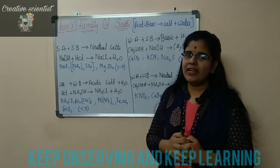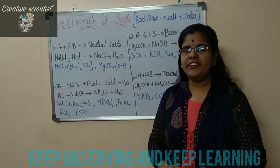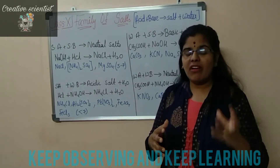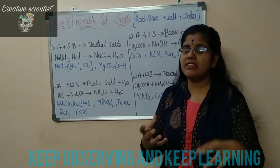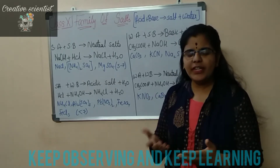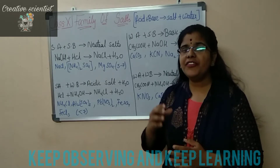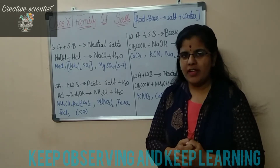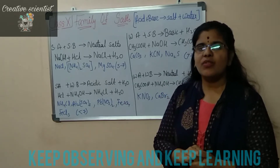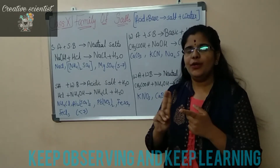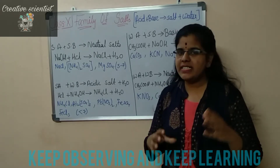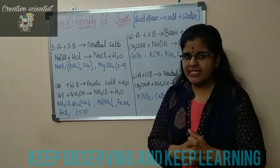Let us see them all in brief. Based on the different combinations of acids and bases — meaning a strong acid or a strong base, or a weak acid and a weak base — there are different types of salts formed. Basically, we will be having three types of salts: acidic salts, neutral salts, and basic salts. Let us see what combination gives out each type.